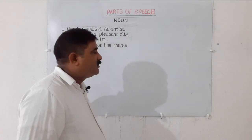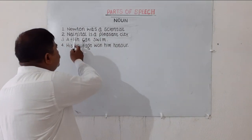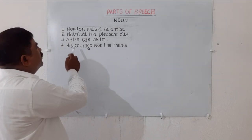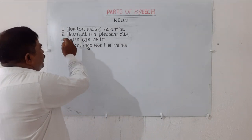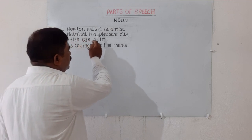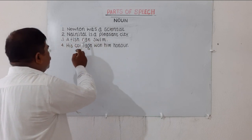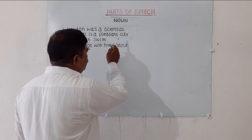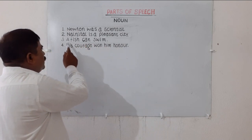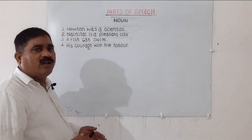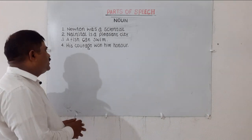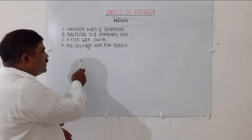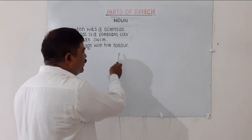Dear scholars, have a look at these sentences. Sentence number one reads: Newton was a scientist. Second, Nanythal is a pleasant city. Third, a fish can swim. And sentence number four is: his courage won him honor.